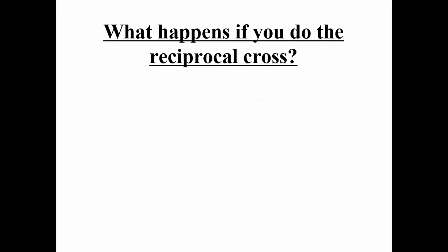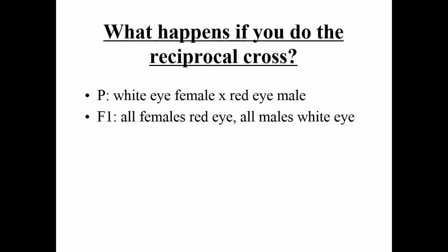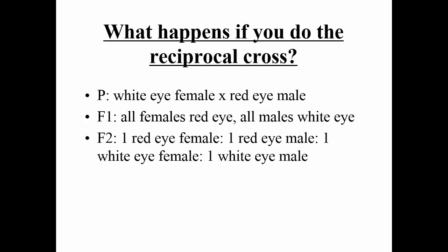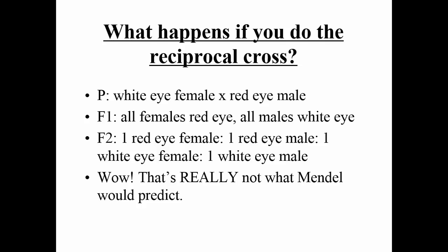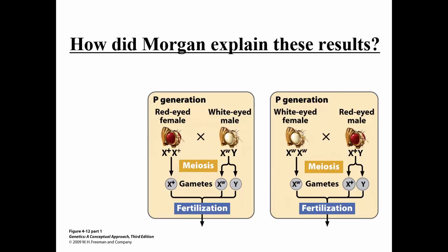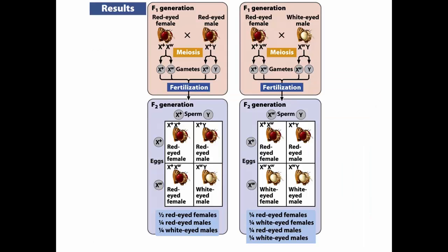What if he did the reciprocal cross? He crossed a white-eyed female with a red-eyed wild male. All the females had red eyes and all the males had white eyes in the F1. In the F2, he got half wild-type and half white — and within each phenotype, half were female and half were male. This is really not what Mendel would expect at all. What Morgan discovered was X linkage: the white gene was located on the X chromosome. The fact that females have two Xs and males only have one basically leads to this abnormal ratio.